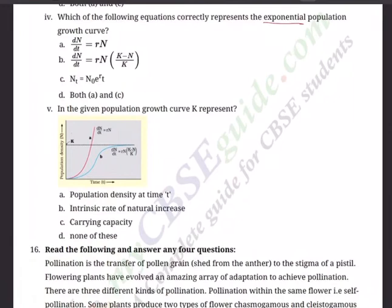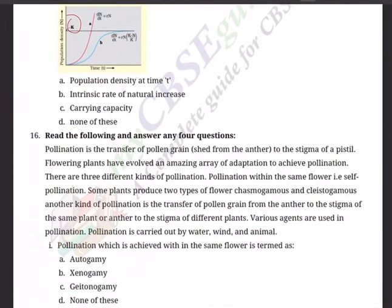Sub-question 5 is diagram-based. In the given population growth curve, K represents a horizontal line. Options: A) Population density at time t, B) Intrinsic rate of natural increase, C) Carrying capacity, D) None of these. Of course, you know the answer — it is carrying capacity.